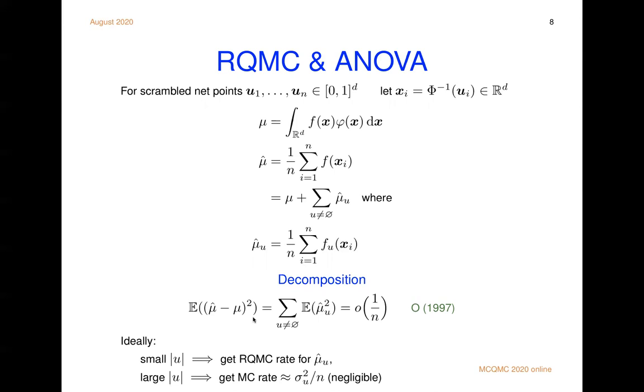And there's an orthogonality or an uncorrelated property under scrambled net sampling. So our mean squared error is just a sum of mean squared errors from each of these effects. And it's also little o of 1 over n for f in L2. When quasi Monte Carlo and randomized quasi Monte Carlo are working well, the story is like this. This subset u can have small cardinality or large cardinality.